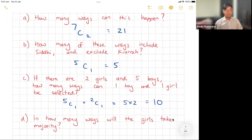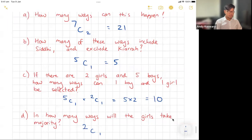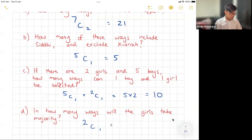Now, in how many ways will the girls take majority? If you think about it, there's only really one way that happens. For the girls to take majority, they both need to be chosen. So in other words, there's only 2 choose 1. And that's the only way that could happen. 2 choose 1, there's only really two ways that happens.